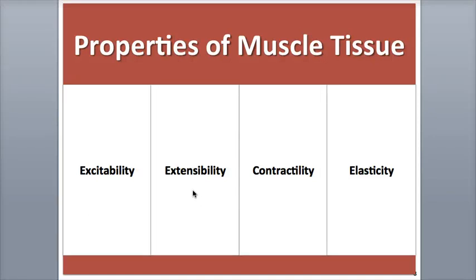The second property is extensibility, meaning that muscle tissue has the capability of being stretched up to a certain point without any damage — similar to stretching a rubber band without breaking it. Skeletal muscle has the least amount of extensibility; as the fibers elongate, the force of contraction weakens. Cardiac muscle is better adapted to extend in order to accommodate the inflow of blood into the heart, which stretches it out. Smooth muscle has the greatest range of extensibility to accommodate large volumes of foods and fluids moving into the expanding stomach.